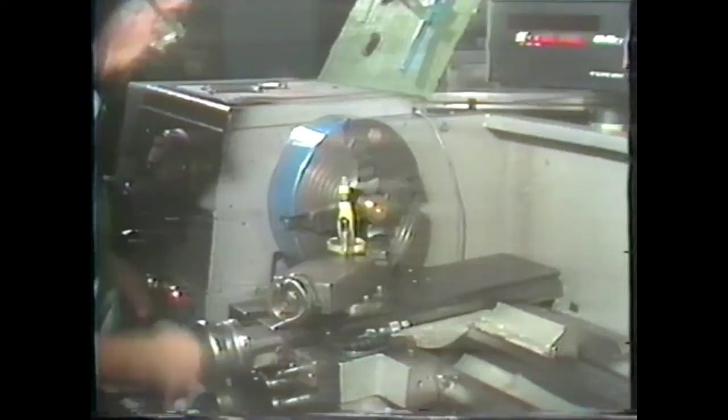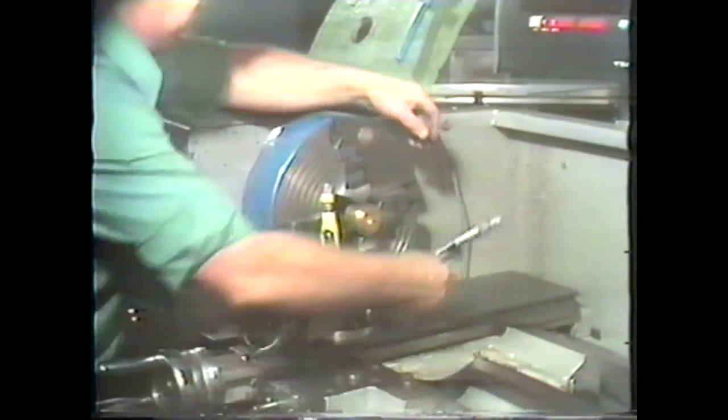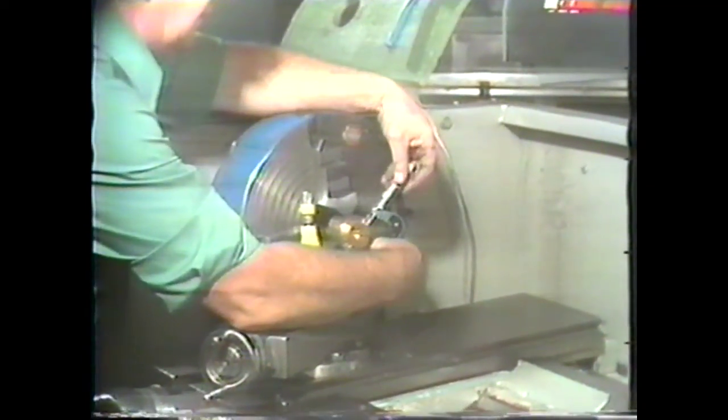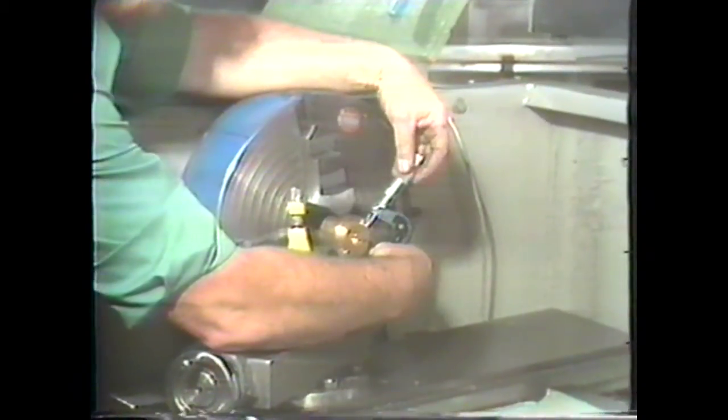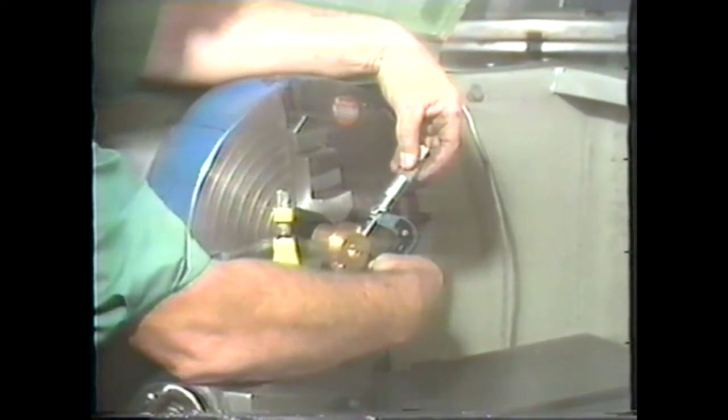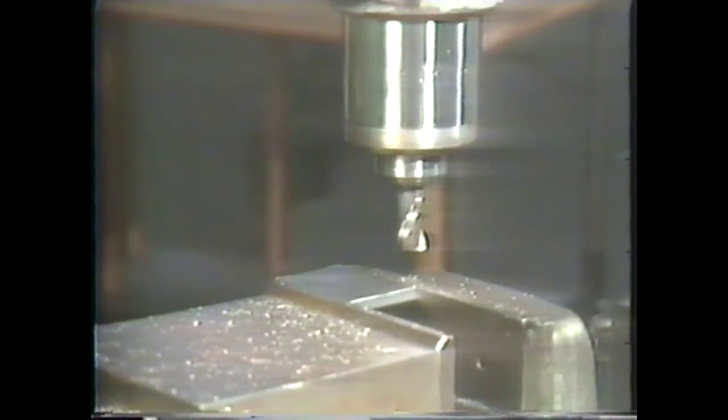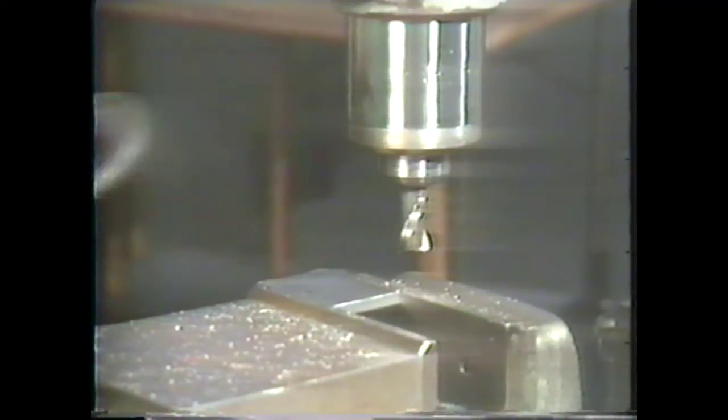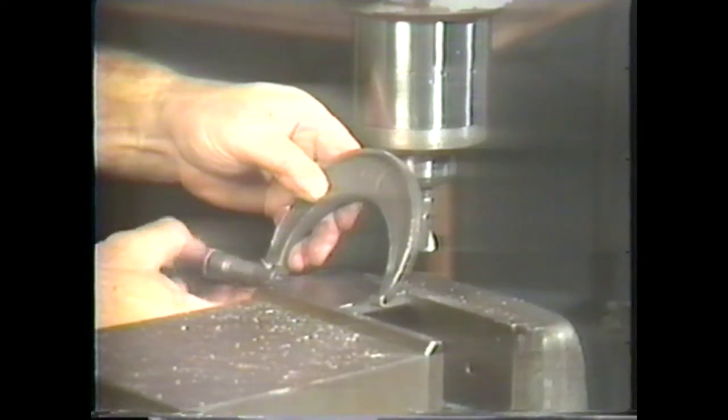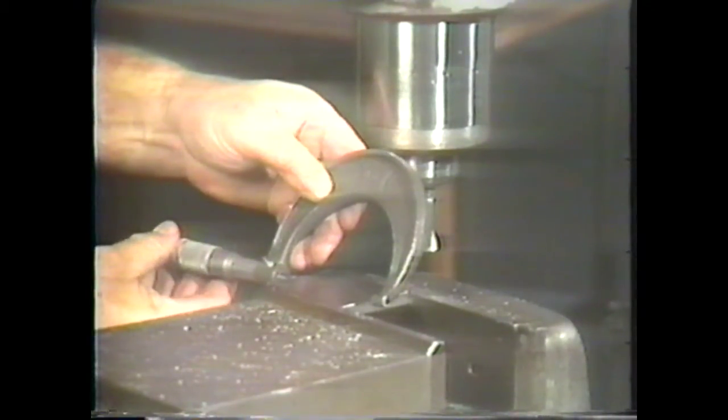Micrometer instruments are used on all types of measuring tools and in the inspection of parts. Here, an outside micrometer is used to check the diameter of a workpiece being turned on a lathe. Another application of a micrometer is to check the length of a piece that has just been machined on a milling machine.